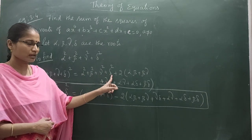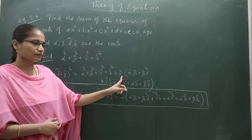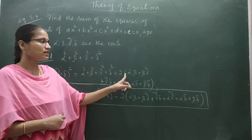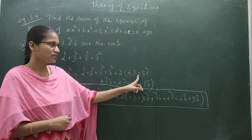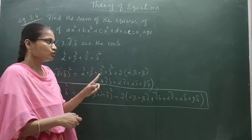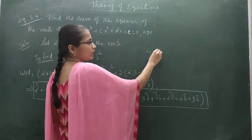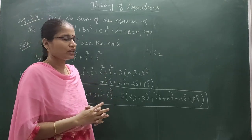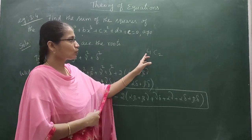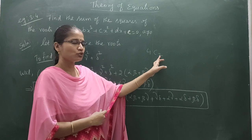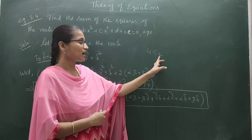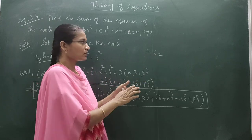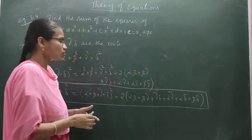After the individual square terms, we add 2 times the sum of the product of the roots taken 2 at a time. Since there are 4 roots and we take 2 at a time, this connects to the combinations concept: 4C2 = 6, so there are 6 possible pairwise combinations.